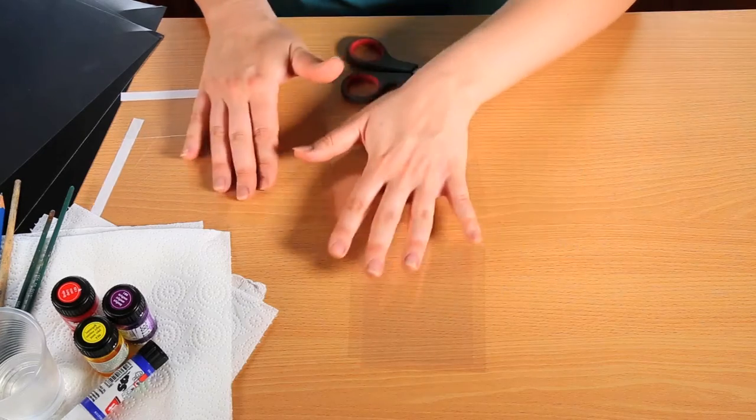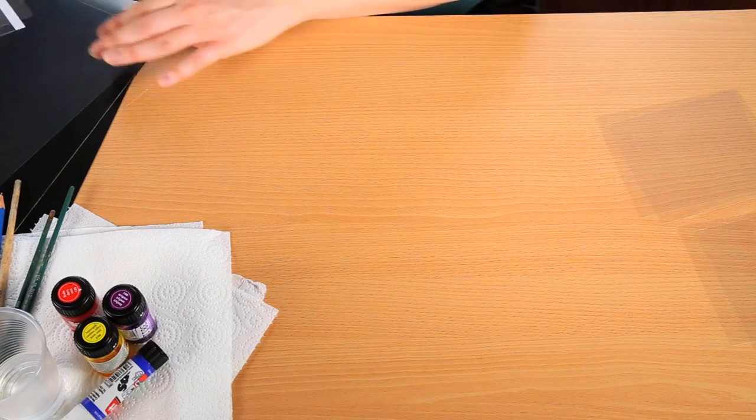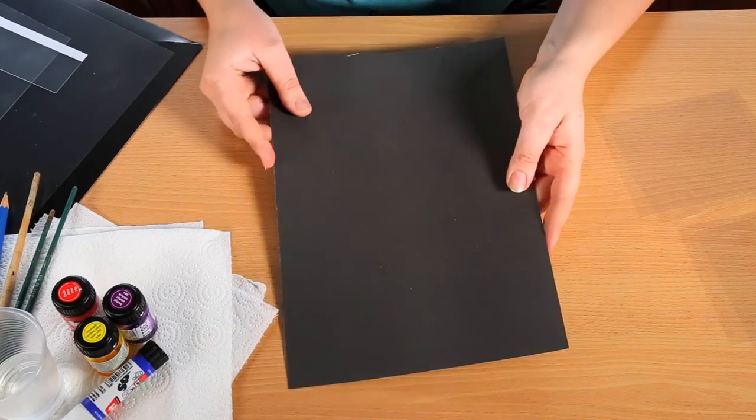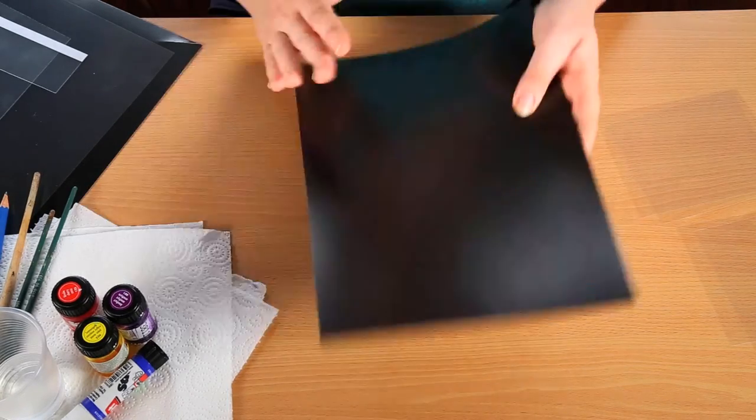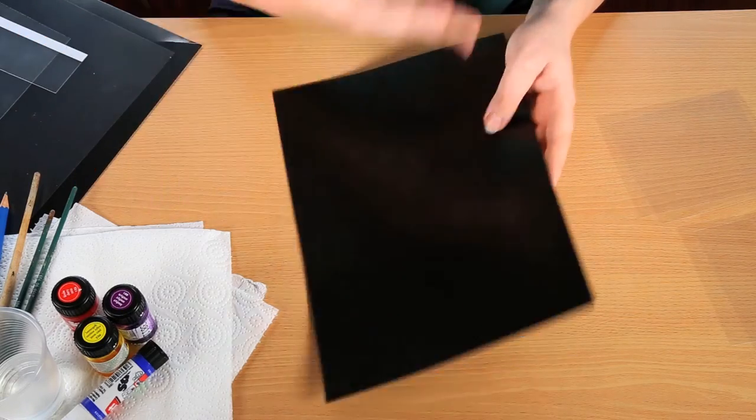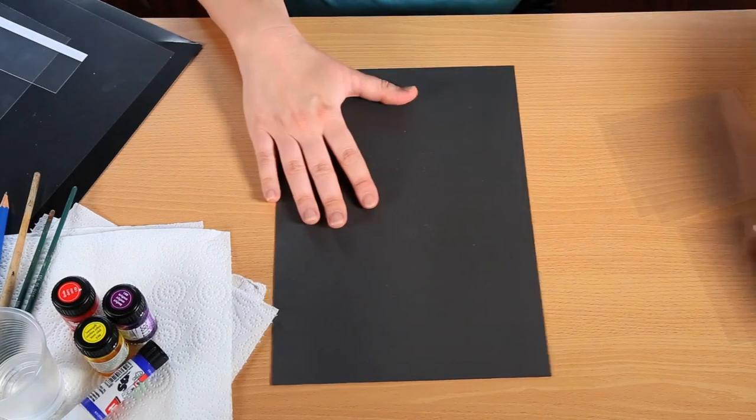So let's put that to one side and the next thing you want to do is get your black card. Now this particular one is kind of shiny on one side and matte on the other. I'm going to choose to do the shiny side for the front.